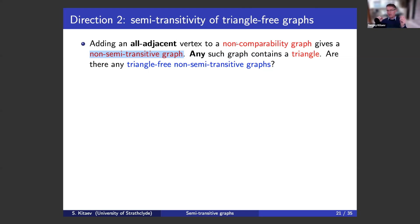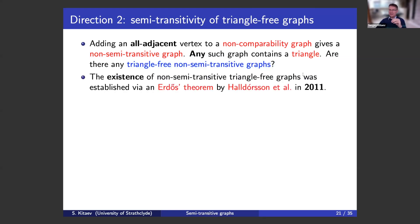Any such graph necessarily contains a triangle because the smallest non-comparability graph is the cycle C5. But the question is: can we construct triangle-free non-semi-transitive graphs? This is a very natural question. The first answer was given in 2011, and it was an existence proof — not a constructive proof. This proof did not offer any explicit examples; we just proved using Erdős's theorem that such graphs do exist.